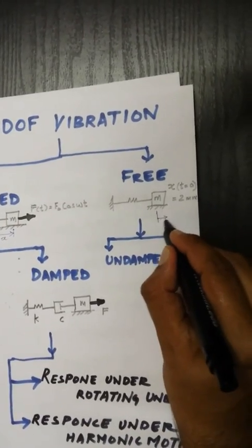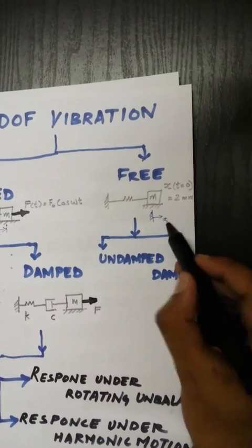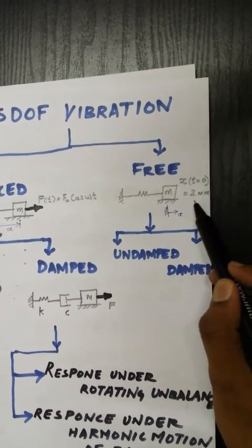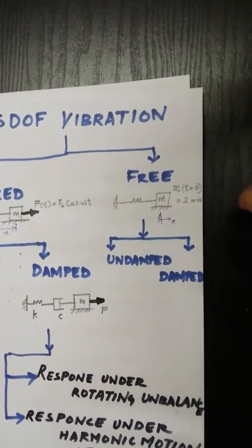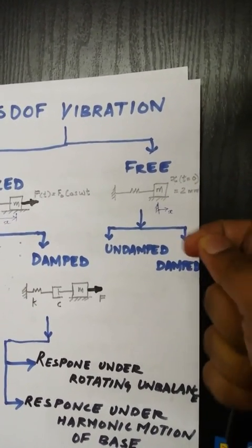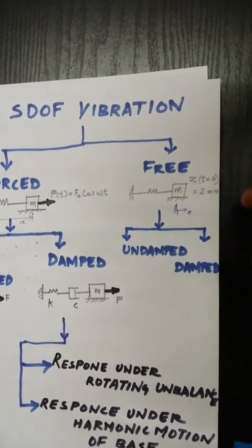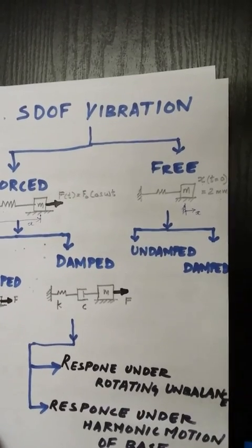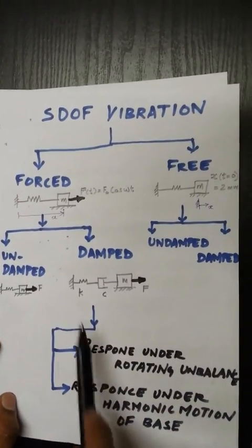Let's say this is my x coordinate. This is the origin of my coordinate system. X at time 0 is 2 mm. So I am slightly pulling it to the right and then releasing it. There is an initial disturbance, but after the initial disturbance there is no external force acting on the system. So that is free vibration.